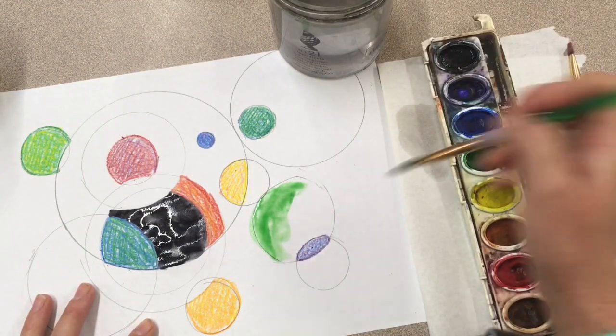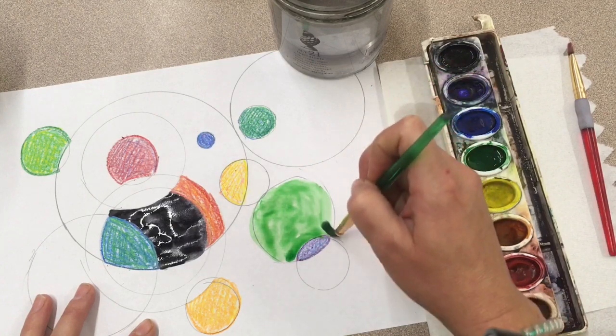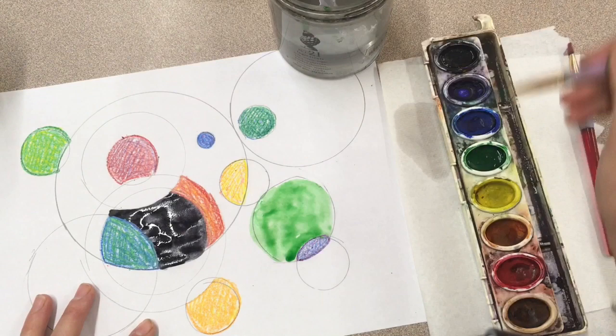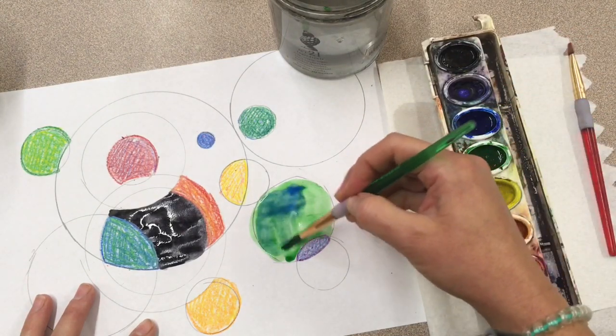So if I'm going to make blue green, start with my green paint and then while the green is still wet, I'm going to mix the blue right there on the paper.